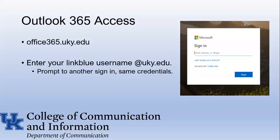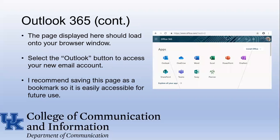For Outlook 365, if you selected this in the first video, here's how you do it. Go to office365.uky.edu and enter your linkblue username at uky.edu. The page displayed here should load onto your browser window after you have put in your password. Select the Outlook button to access your new email account on the left-hand side of the screen. I recommend saving this page as a bookmark so it is easily accessible for future use. It's as easy as that.